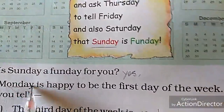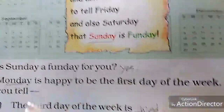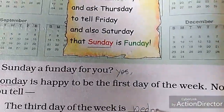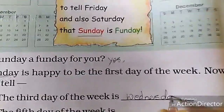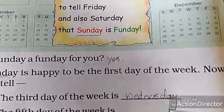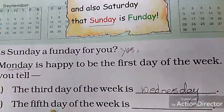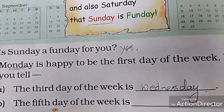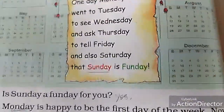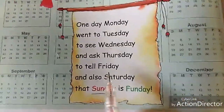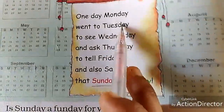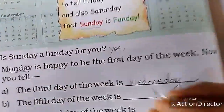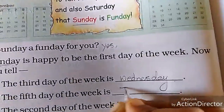If Monday is the first day, then the third day of the week is Wednesday. Next — the fifth day of the week is: one, two, three, four, five. The fifth day of the week is Friday.